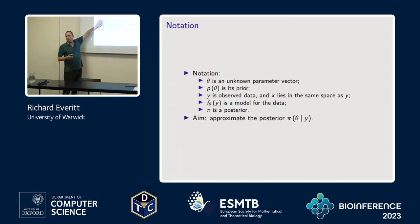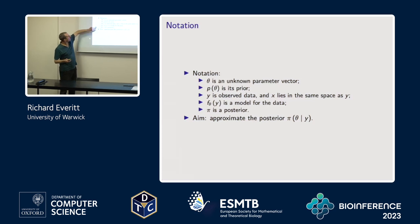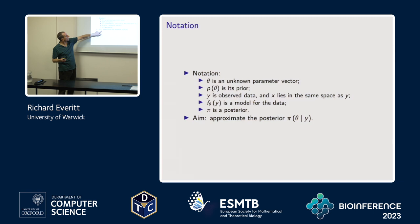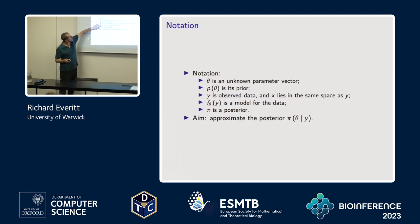The setup here — my writing on the slide is quite small — is that we've got some unknown parameter theta, we've got some observed data y, we want to know about a posterior pi of theta given y, and we've got f sub theta of y, which is a model for the data.